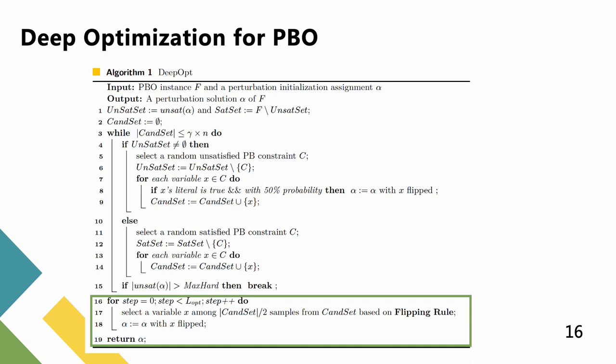In the second phase, the algorithm applies the search process to perturb the assignment α until the limit of iteration LOPT is reached. The algorithm employs the BMS strategy in the process of selecting a candidate variable. Randomly choosing the set of candidate set divided by two variables to compose a candidate set. Afterward, the algorithm flips a variable x among the candidate set based on the flipping rule.